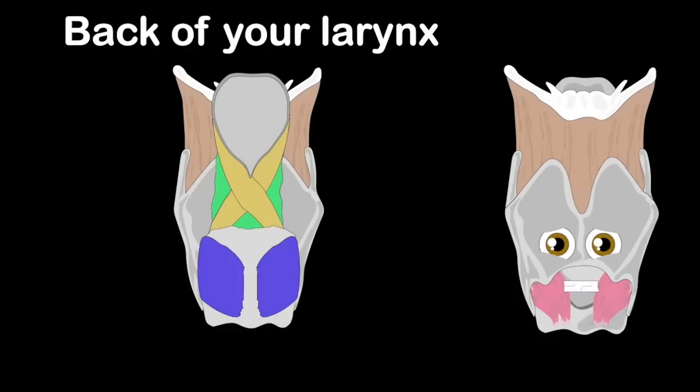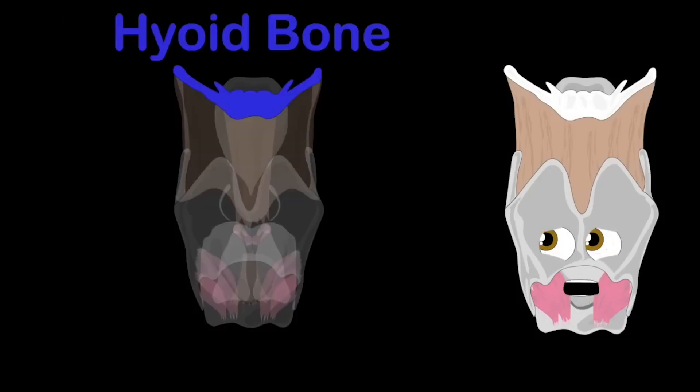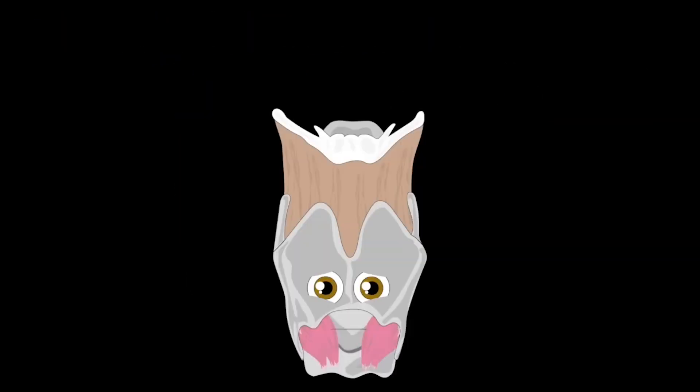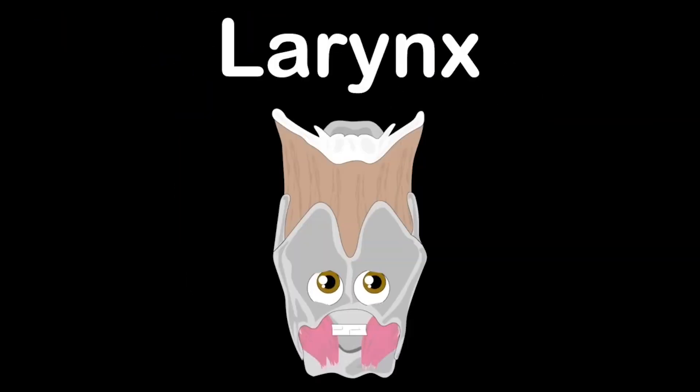Last, we have the hyoid bone — it's not part of your larynx. Thyrohyoid membranes attach so they're linked.